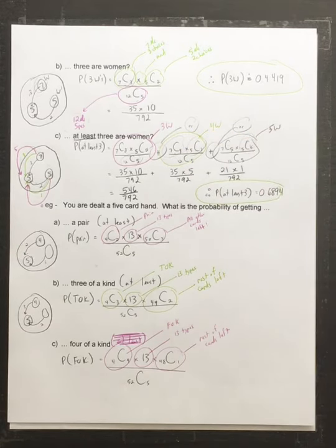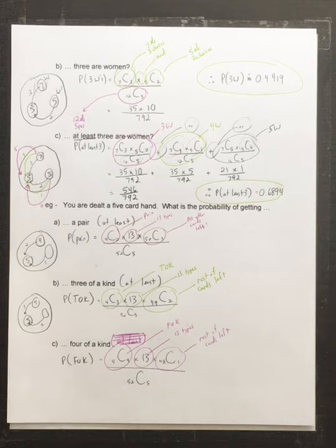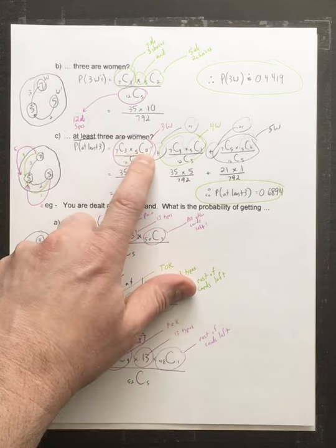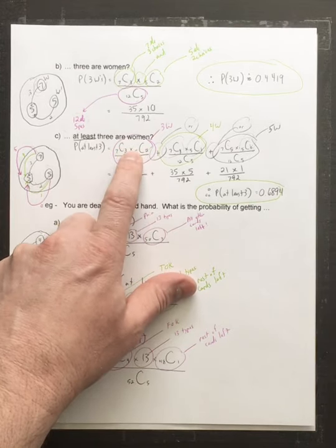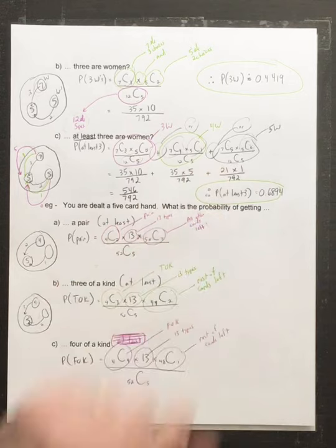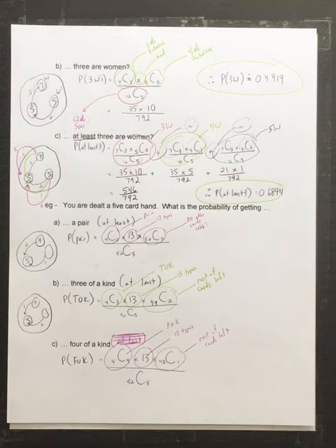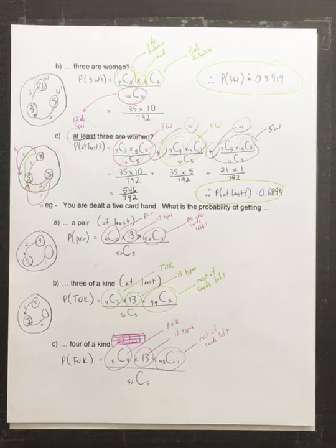This problem combines combinations, successes and failures, the multiplicative principle (choosing from two groups), and the additive principle (multiple cases). It's a great example that leads into what's called a hypergeometric distribution of probability, which we'll cover in the next unit — and it's actually not as difficult as it sounds.